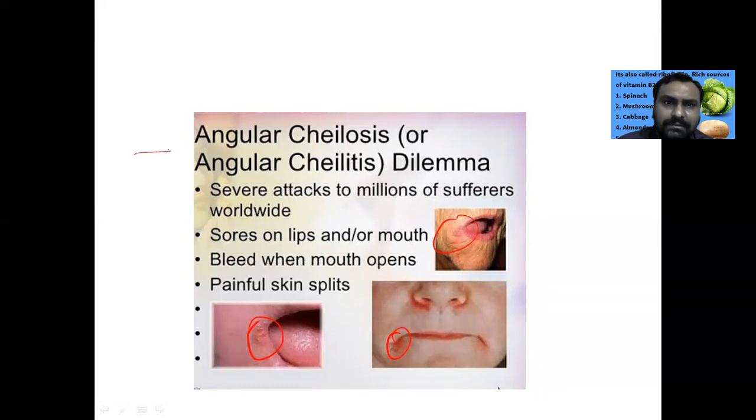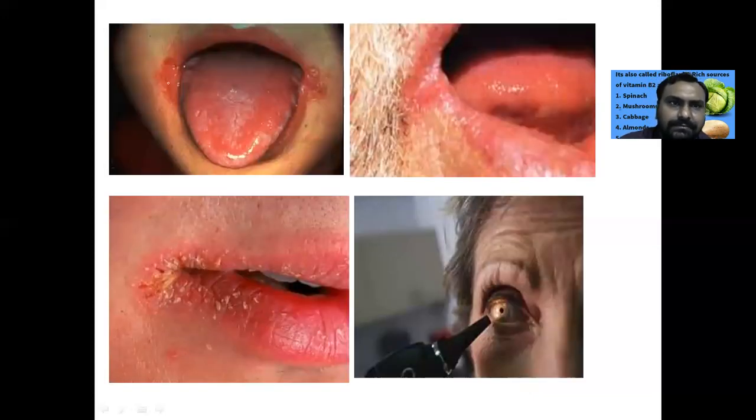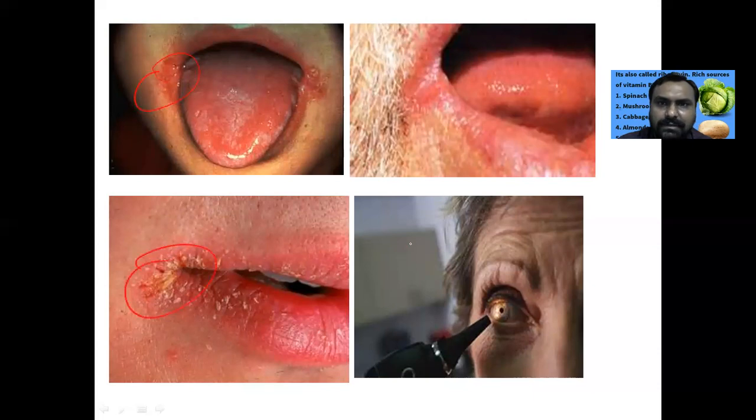What is angular cheilosis? You can see here sores on the lips and mouth that bleed when mouth opens, painful skin splits. These are typical of vitamin B2 riboflavin deficiency. You can see angular cheilosis, corneal vascularization, angular cheilosis, stomatitis, and magenta color tongue.